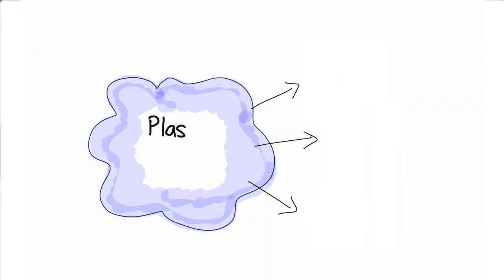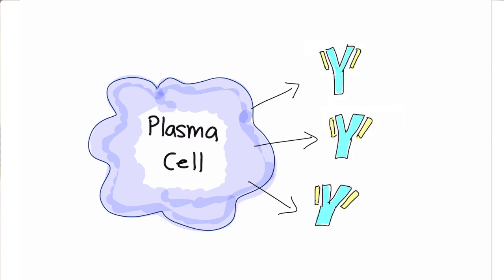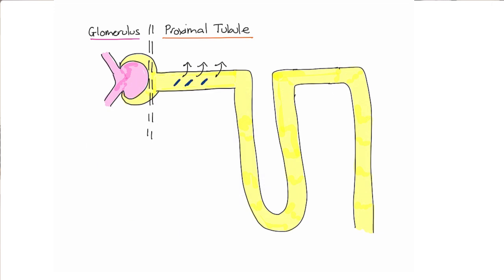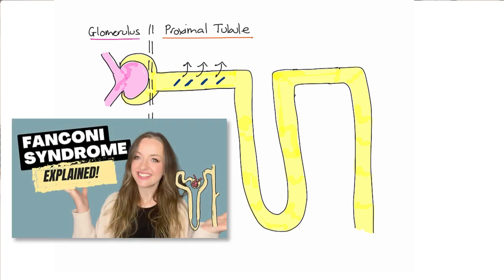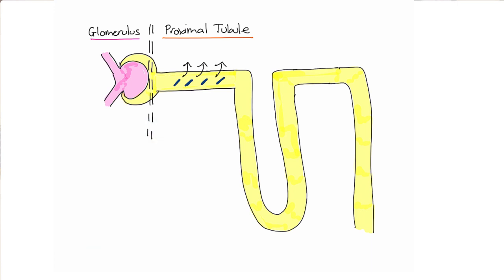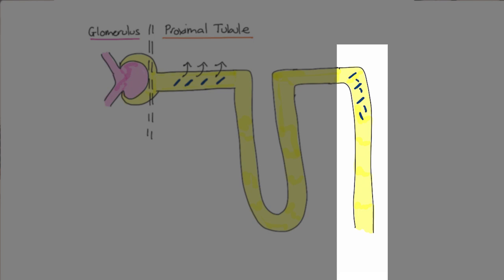The most important clinical scenario for tubular proteinuria is myeloma. In myeloma, a plasma cell population is generating a monoclonal antibody again and again, and on this antibody there are light chains — either kappa or lambda. Light chains make their way into the filtrate and into the proximal tubule, but if there are too many to process, it might become saturated or have a meltdown — Fanconi syndrome. The excess light chains may head to the distal nephron, potentially causing cast nephropathy, and they'll also end up in the urine.